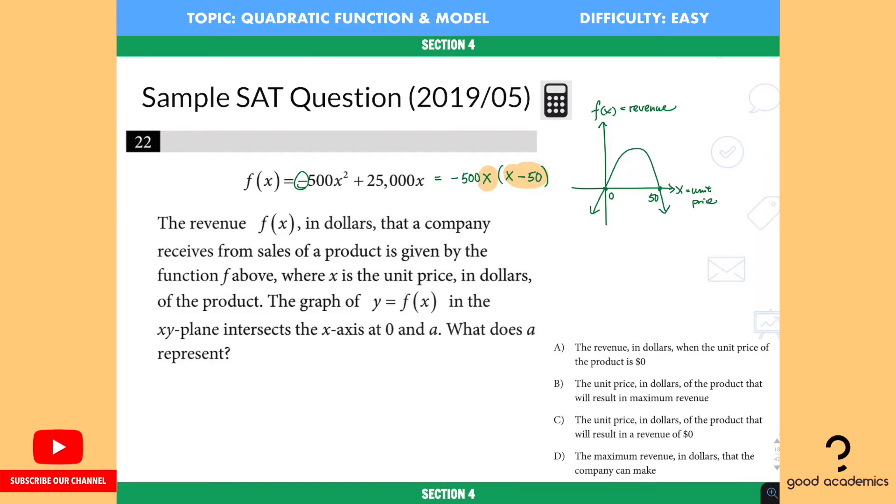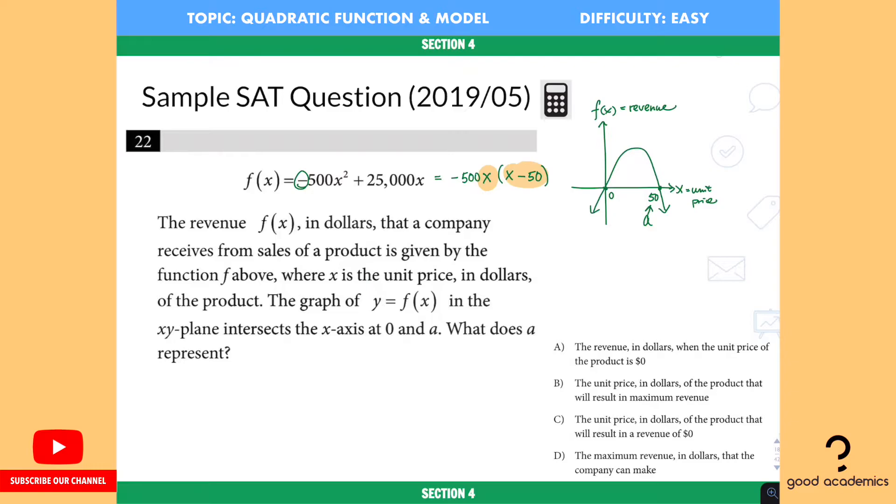So what does a represent? Now a, apparently, is this number 50 right here, and it's 50 meaning that's the unit price. If it is at 50, the revenue, which is the y value, would be zero. So that's what it means. The revenue will be zero at two unit prices: at zero dollars and at 50 dollars, meaning that it's either too cheap that you are giving it for free so you're not receiving any revenue, or it is being too expensive so nobody would actually buy it and that's why you don't have any revenue.